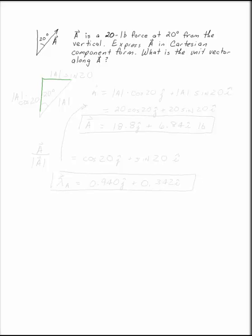If you look at this triangle here, the magnitude of A is on the hypotenuse. This is 20 degrees. By trig, this side has to be the magnitude of A times cosine of 20, because it's adjacent over the hypotenuse. This side has to be the magnitude of A times sine of 20, opposite the angle.